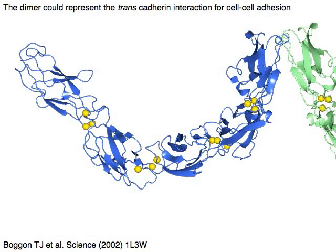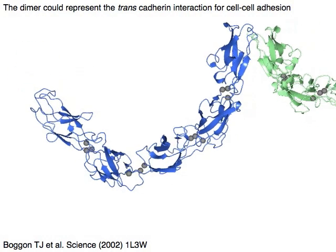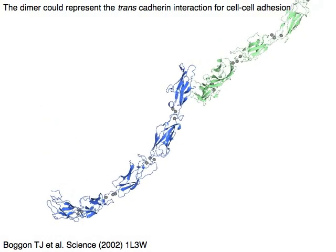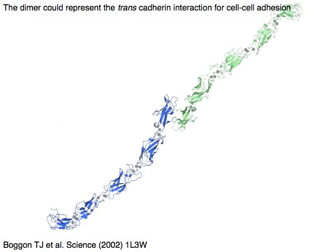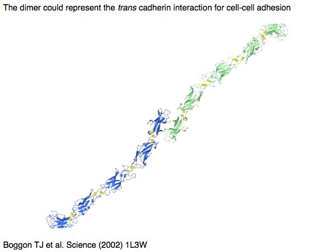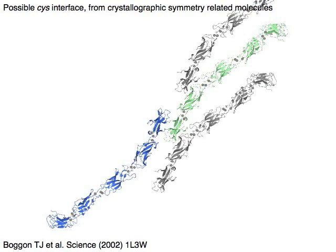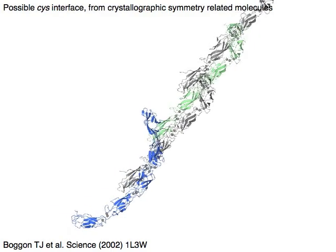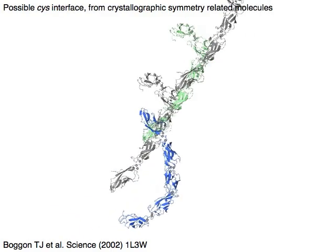The dimer could represent the trans-cadherin interaction for cell-cell adhesion. Crystallographic symmetry-related molecules suggest the possible cis interface.